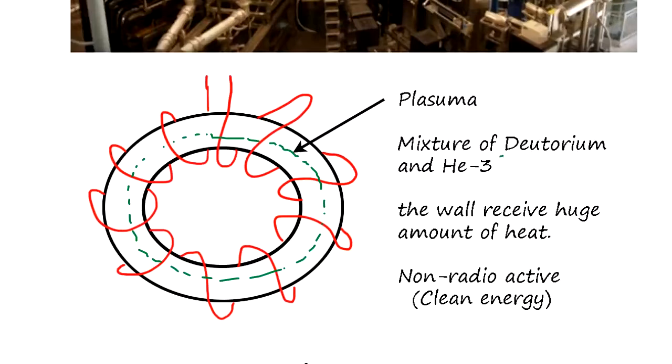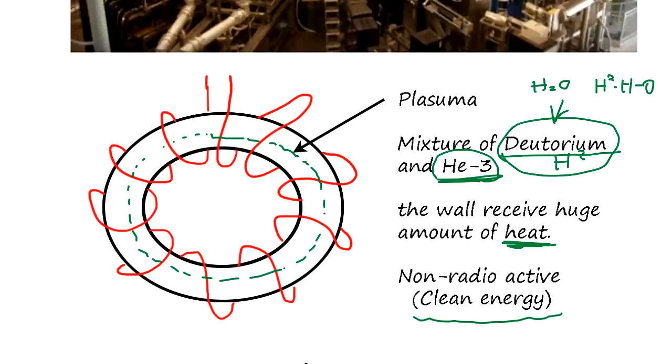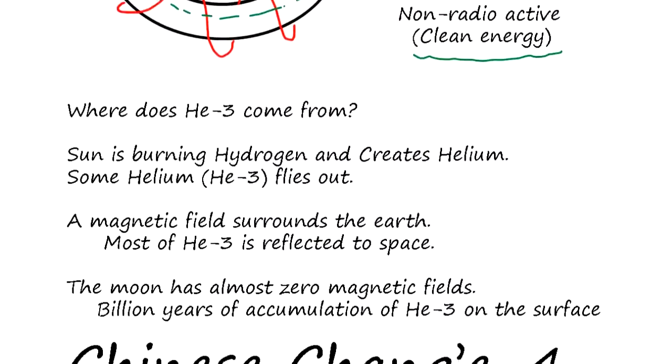Mixture of deuterium, which is H2, and Helium-3 is going to be injected. The wall receives a huge amount of heat. That's non-radioactive clean energy. Just a little amount of Helium-3 and deuterium. Deuterium, we can get from the ocean. There's a lot of H2O, and some of them is heavy hydrogen O. We can get deuterium from the ocean. Helium-3 is very hard to find. It's a rare resource.